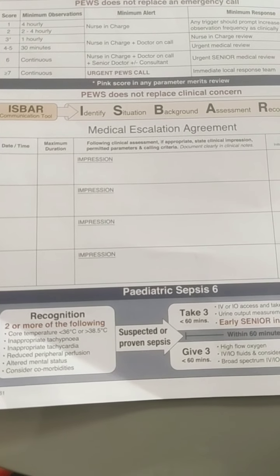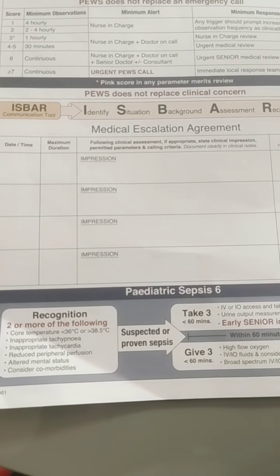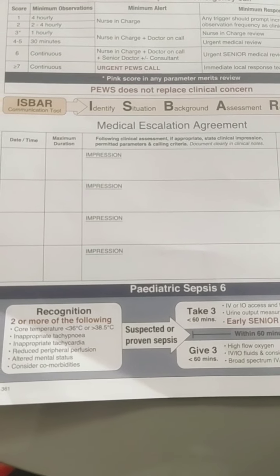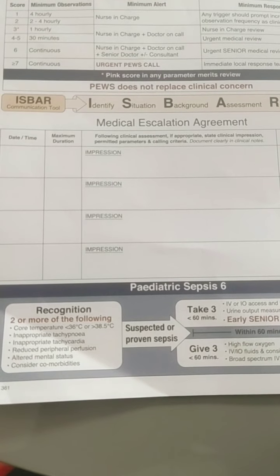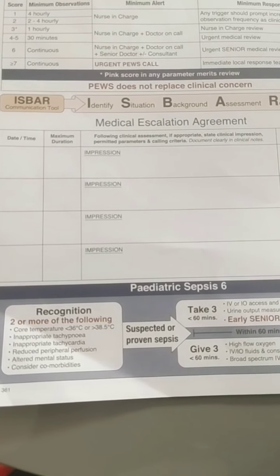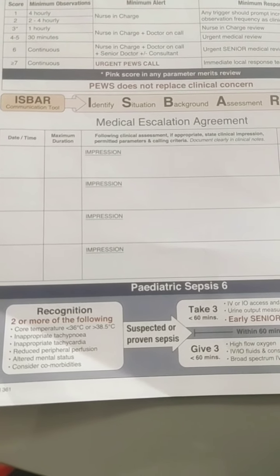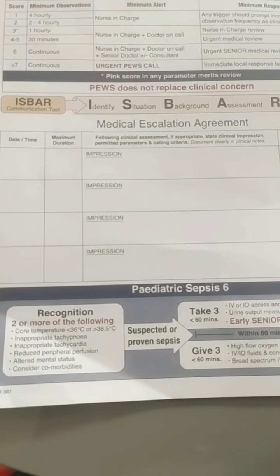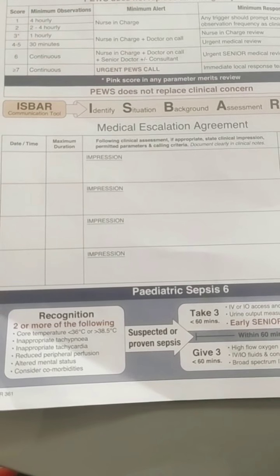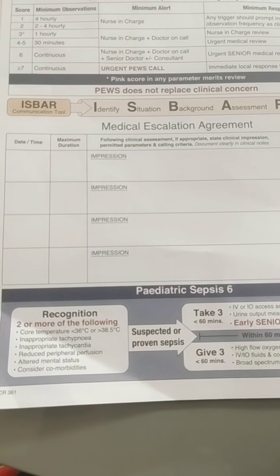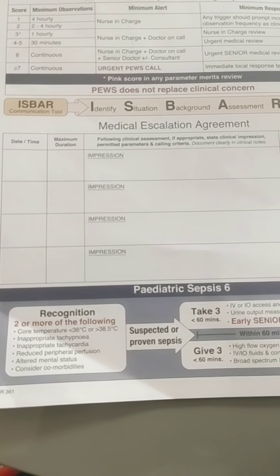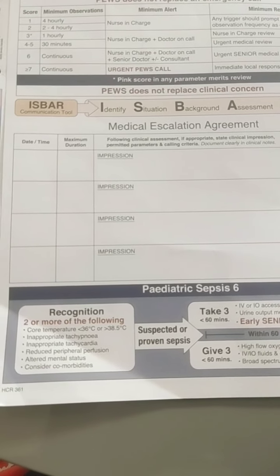When the score is three or above, we need to inform the doctors. To communicate with the doctor, we use the ISBAR communication tool, which I will explain in the next video. I hope you all understood what the chart is and how to use it. Thank you.